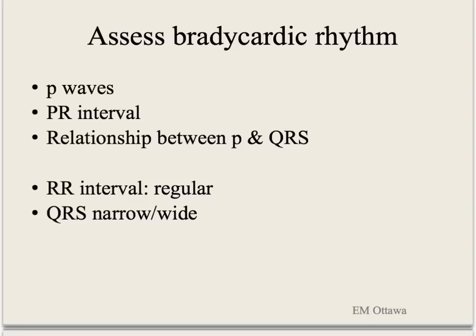To assess a bradycardic rhythm, we look at the following: whether there are P waves; if there are P waves, what is the PR interval; the relationship between P and QRS; whether there are P waves before each QRS complex; and whether there are QRS complexes after every P. We then look at the RR interval to see if it is regular or not, and whether the QRS complexes are narrow or wide.